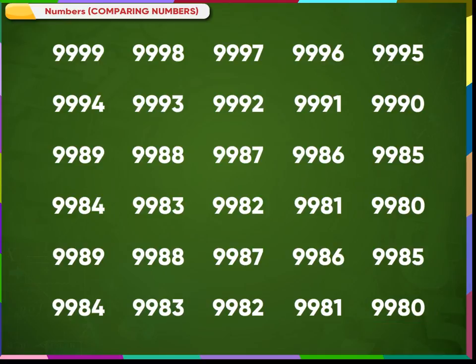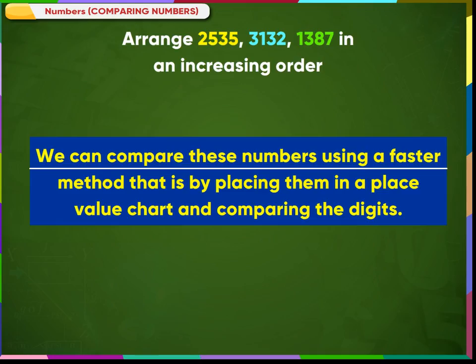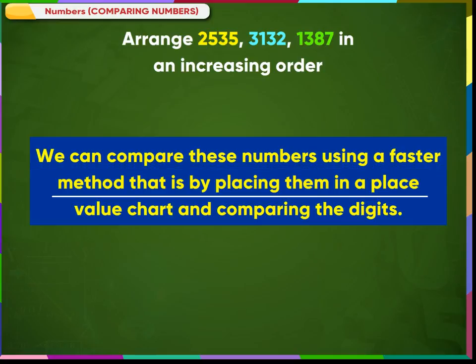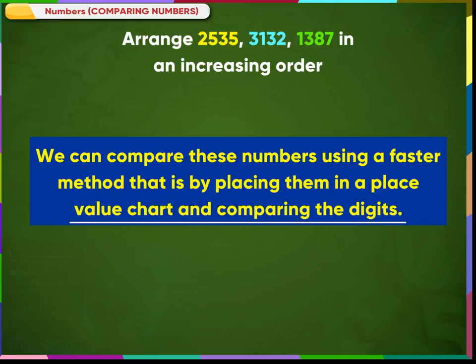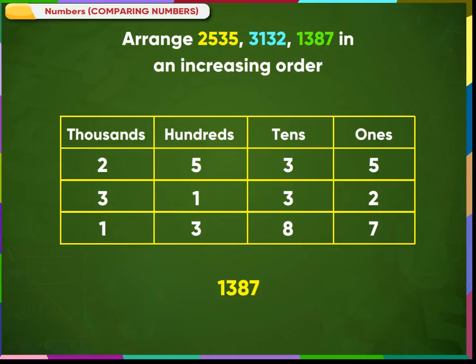Let us solve a few problems. Example: Arrange these numbers in increasing order. We can compare these numbers using a faster method by placing them in a place value chart and comparing the digits. Make a table with 4 columns as shown. Write the given numbers in the table. Here, 3132 is the largest and 1387 is the smallest. So, the ascending order of the given numbers is 1387, 2535, and 3132.